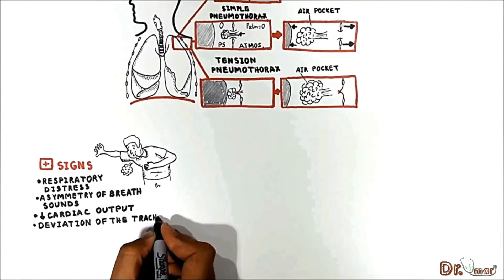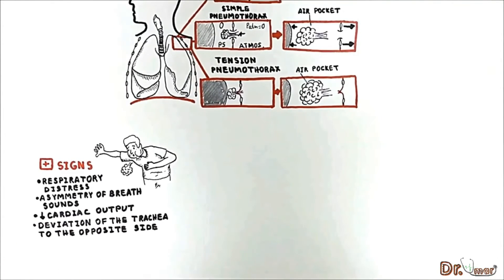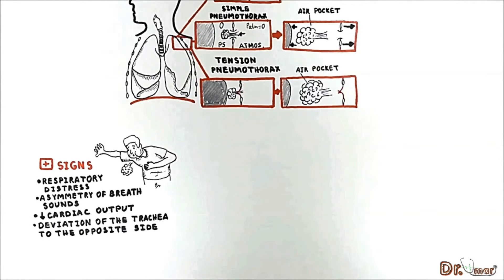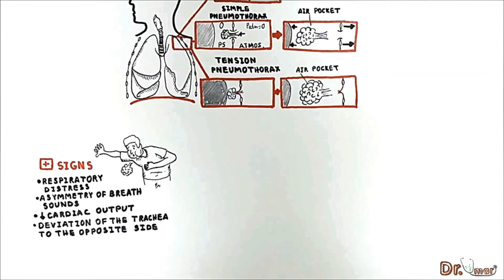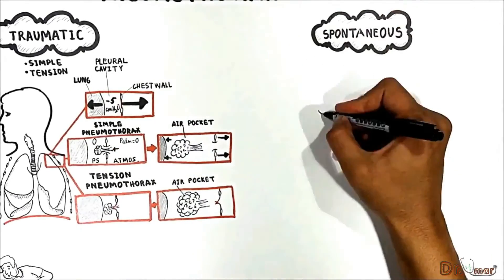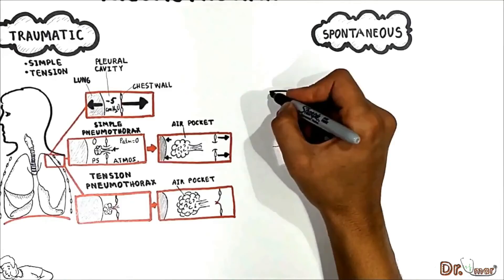The fourth sign of tension pneumothorax is deviation of the trachea to the side opposite the tension pneumothorax. It is important to know that in simple pneumothorax, the air pocket is not as large, so the trachea deviates to the same side of the pathology — this is an important distinction.